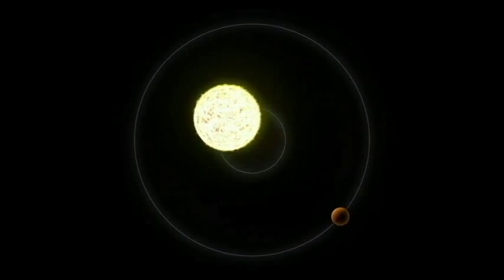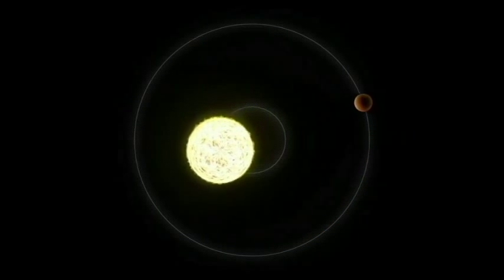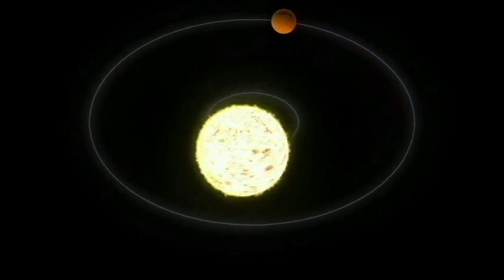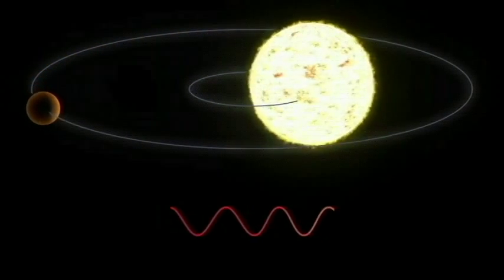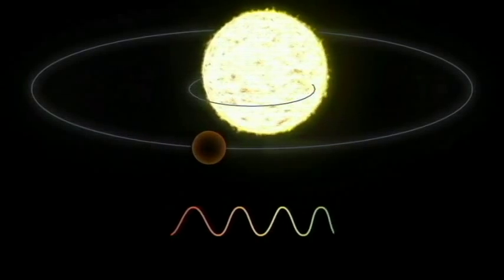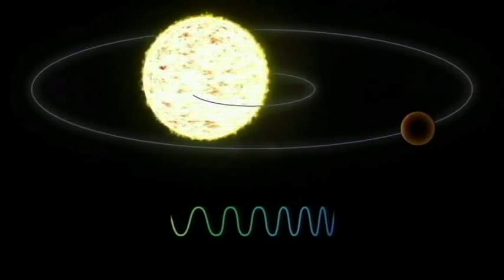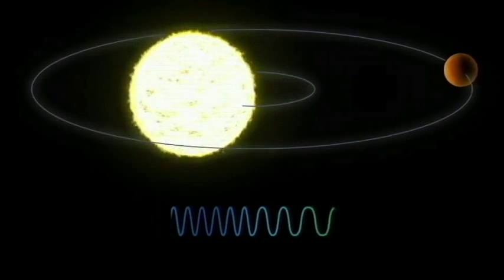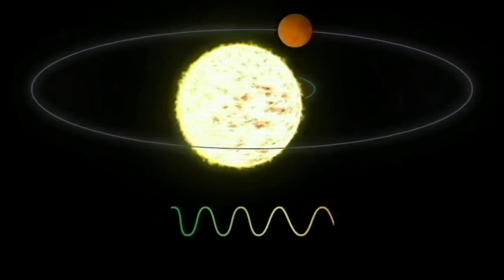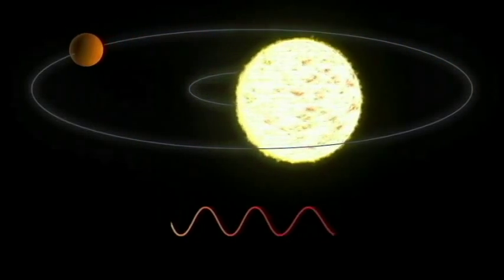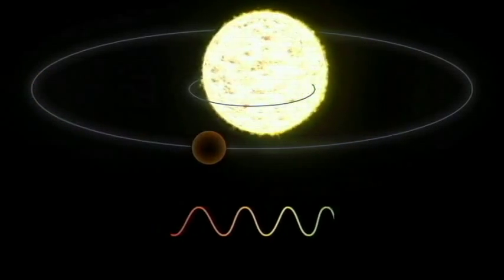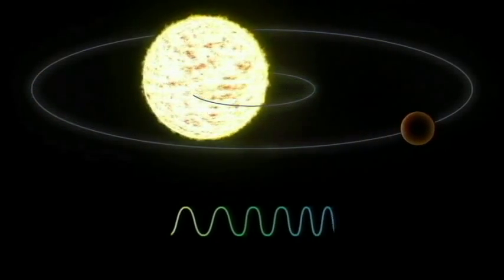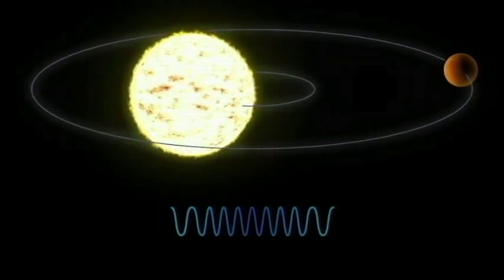The radial velocity method uses gravity to detect planets. Remember, this planet is much smaller than the star, but it still exerts a tiny gravitational pull or tug on the star as it orbits. When a planet is behind the star from our point of view, it pulls the star slightly away from us. When it's in front, it pulls the star slightly towards us. This causes the star to wobble back and forth. Astronomers look for this wobbling to find planets.